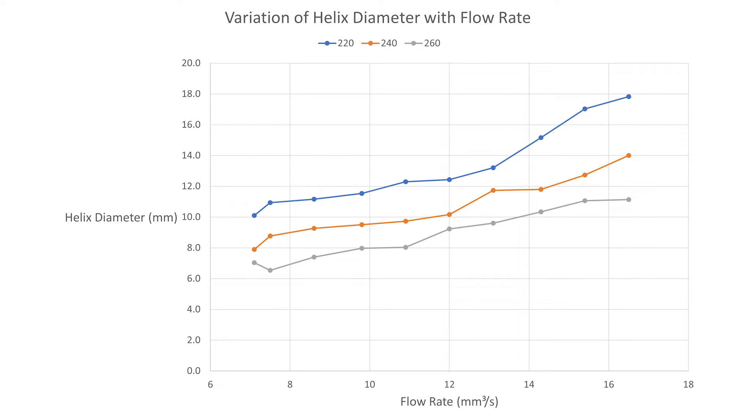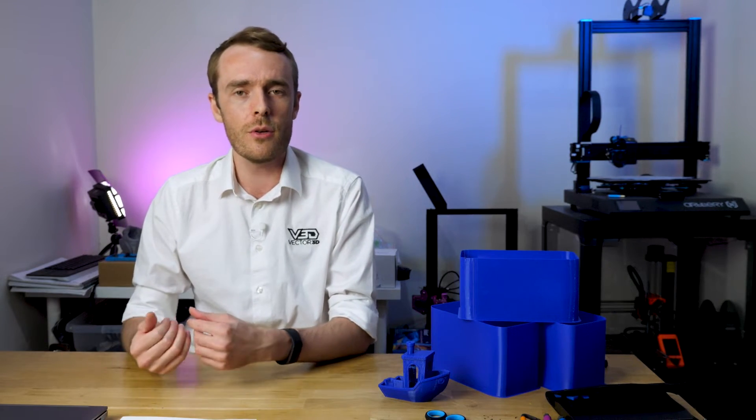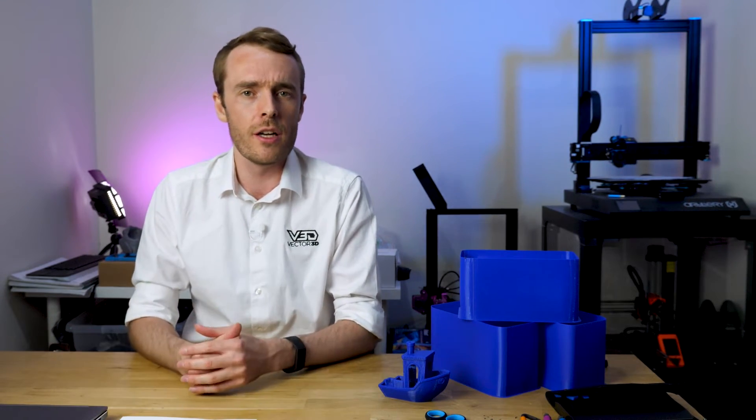There also seems to be a relationship between these three series. For example, a 10 millimeter helix diameter was achieved with 220 degrees celsius at around 7 millimeters cubed per second, 240 degrees celsius at 11 millimeters cubed per second, and 260 degrees celsius at 14 millimeters cubed per second. This suggests to me the viscosity of the filament was equal for these three tests, so perhaps the filament leaving the hotend is equal temperature in all of these cases. The slower flow rate will have had more time to heat up but was heating up a little bit slower, whilst the faster flow rate had more heating so heated up quicker and overall comes out seemingly to about the same.